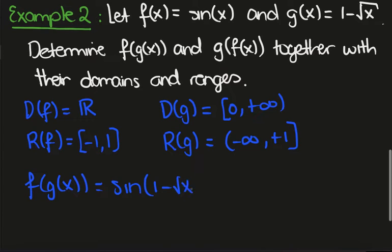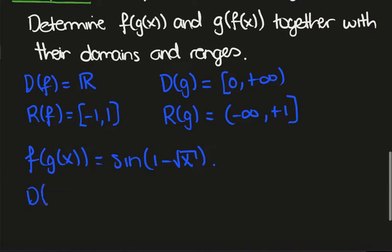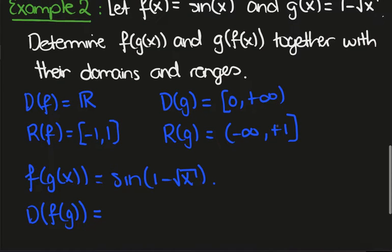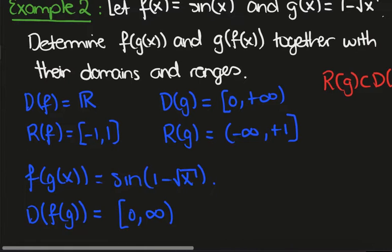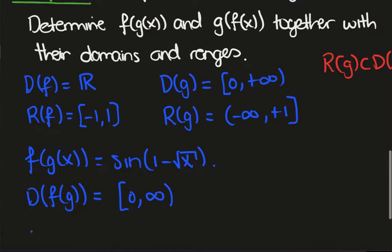For f∘g, we replace x by g(x), giving sin(1 - √x). The domain of f∘g is the domain of g such that the range of g fits into f. The domain of g is [0, ∞), and we check that the range of g, which is (-∞, 1], fits into the domain of f, which is ℝ — this is indeed true. So the domain of the composite is just the domain of g: [0, ∞).